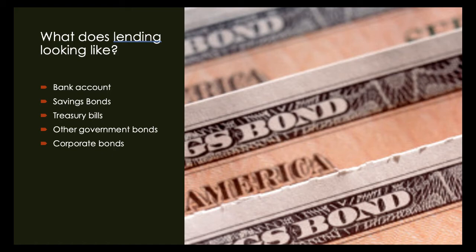The same concept applies to other government bonds, such as municipal bonds or state bonds, which might be used to build a school or fix a highway. You allow that municipality to borrow that amount and pay you back later with interest. Finally, a corporate bond is a company asking to borrow money, which they promise to repay many years later with interest. All of these are examples of investments where you are essentially lending money to these entities to be paid back later.